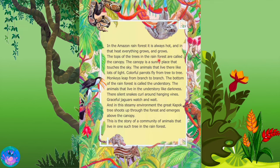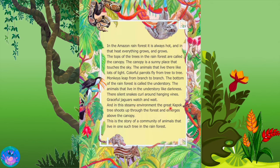The tops of the trees in the rainforest are called the canopy. The canopy is a sunny place that touches the sky. The animals that live there like lots of light. Colourful parrots fly from tree to tree. Monkeys leap from branch to branch. The bottom of the rainforest is called the understory. The animals that live in the understory like darkness. There silent snakes curl around hanging vines. Graceful jaguars watch and wait. And in the steamy environment the great kapok tree shoots up through the forest and emerges above the canopy. This is the story of a community of animals that live in one such tree in the rainforest.